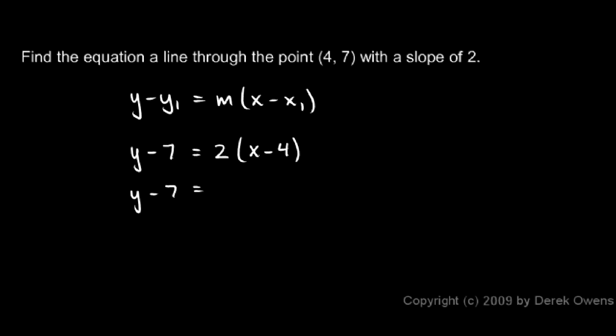I'll leave the left side alone and distribute the 2. This gives me 2x minus 8. And then when I add 7 to each side, I get y equals 2x minus 1. And now it's in slope-intercept form. We can see that it has a slope of 2 and a y-intercept of negative 1.